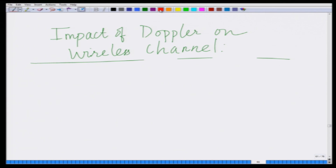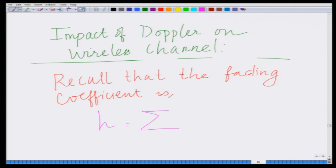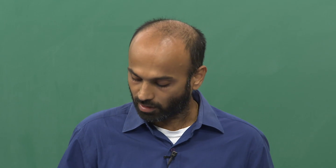Let us look at the impact of the Doppler on the wireless channel. For that, recall that the wireless channel coefficient is defined as our fading coefficient. The fading coefficient h is defined as h = Σ (i=0 to L-1) aᵢ · e^(−j2π·fc·τᵢ), where fc is the carrier frequency. This is the definition of the flat fading channel coefficient h.